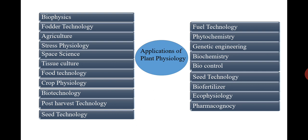Tissue culture — tissue culture means that on an artificial nutrient media, plant tissue is generally grown into a new plant having novel characters. By using the knowledge of plant physiology, we can grow different types of plants and provide nutrients as per their requirement to the growing tissue. So plant physiology is most important in tissue culture.